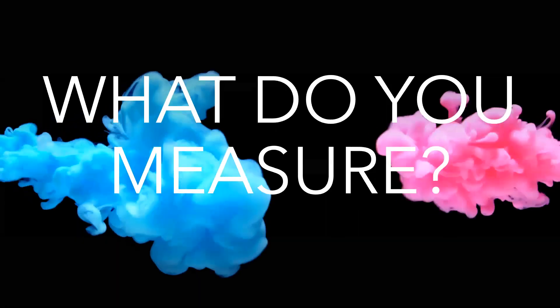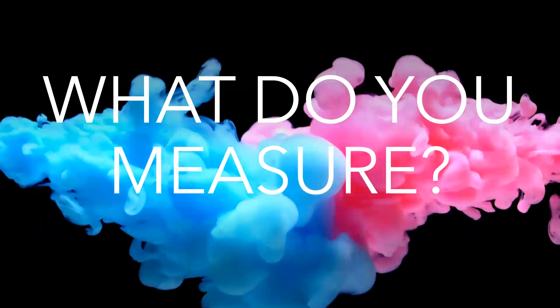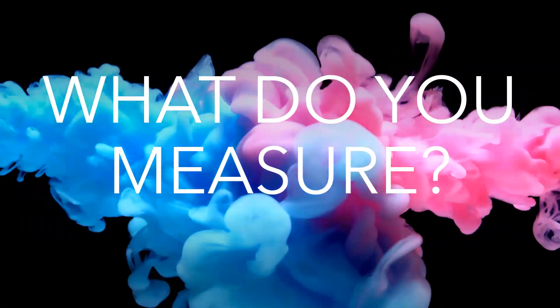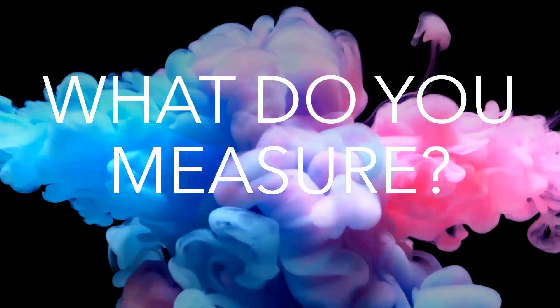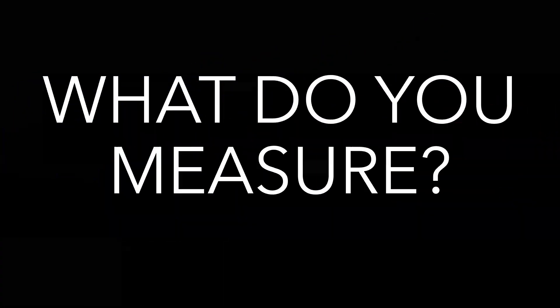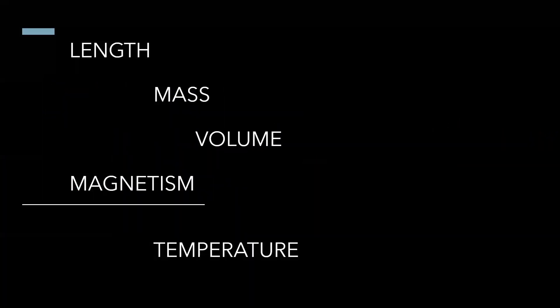What do you measure? That's the big question — what do we measure when we are dealing with matter? The things that we measure are length, mass, volume, magnetism, and temperature. That is a lot, especially for matter. So we're going to go ahead and talk about each one and the tools that are used for each one as well.